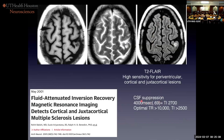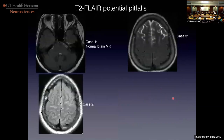The T1 of CSF is four seconds times 0.69, which gives me the TI I want to use ideally. Let's look at some T2 FLAIR pitfalls. The first case is a normal brain MRI. Why does FLAIR fail here? Why do I lose suppression around the brainstem and in the fourth ventricle? The inversion pulse is slice-selective — the slice-select gradient is on, so it only inverts the spins in that slice. So if there's any inflow of unsaturated spins, this is what you're going to get.